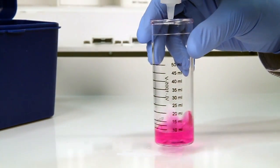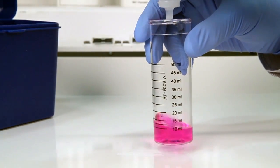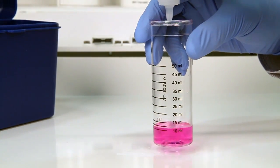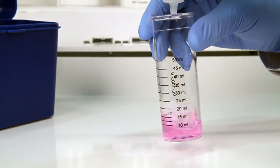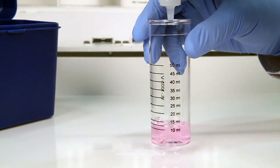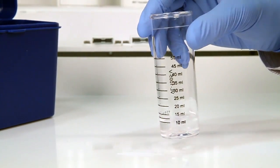After the addition of each drop of titrant, swirl the vial to make sure the sample is properly mixed. Count the number of drops during this step. The titration is complete when the sample changes from pink to clear.